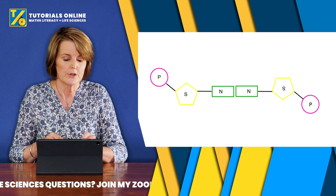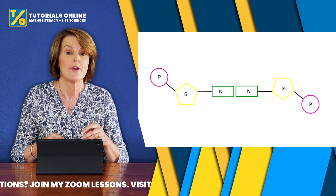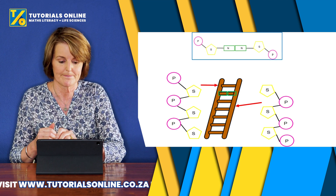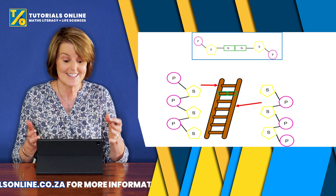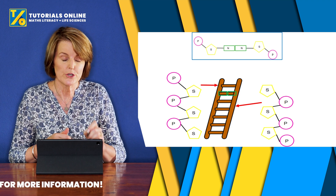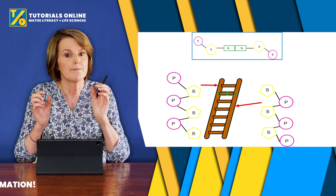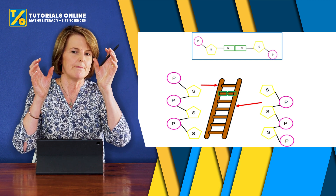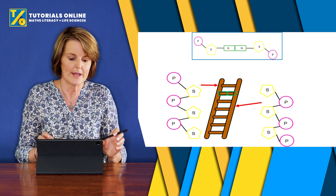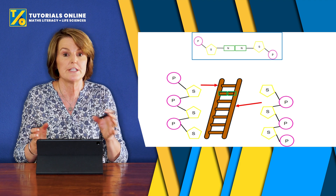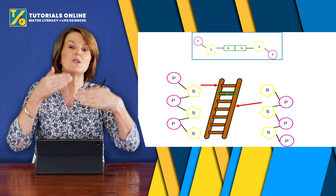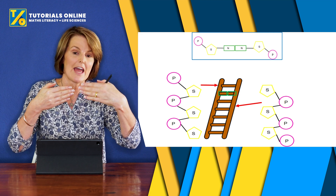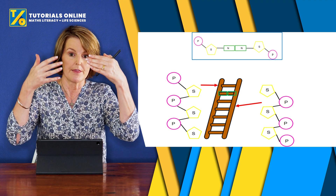If you look at the diagram, you can see the deoxyribose sugar is in the middle, and you have the nitrogenous base on one side and the phosphate on the other side of each nucleotide. The sugar and the phosphate part forms the sides of the ladder — we speak about a phosphate-deoxyribose backbone. Each side or long part of the ladder is formed by the phosphate and deoxyribose. And then the rungs of the ladder — each rung consists of two nitrogenous bases coming together, held by a weak hydrogen bond.